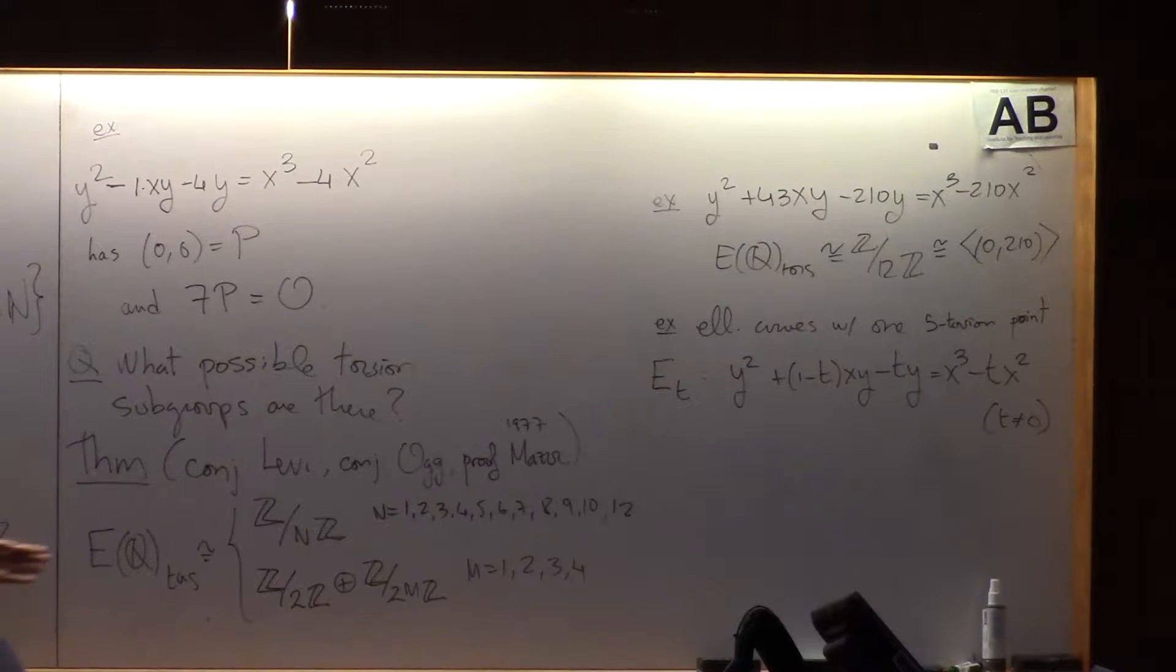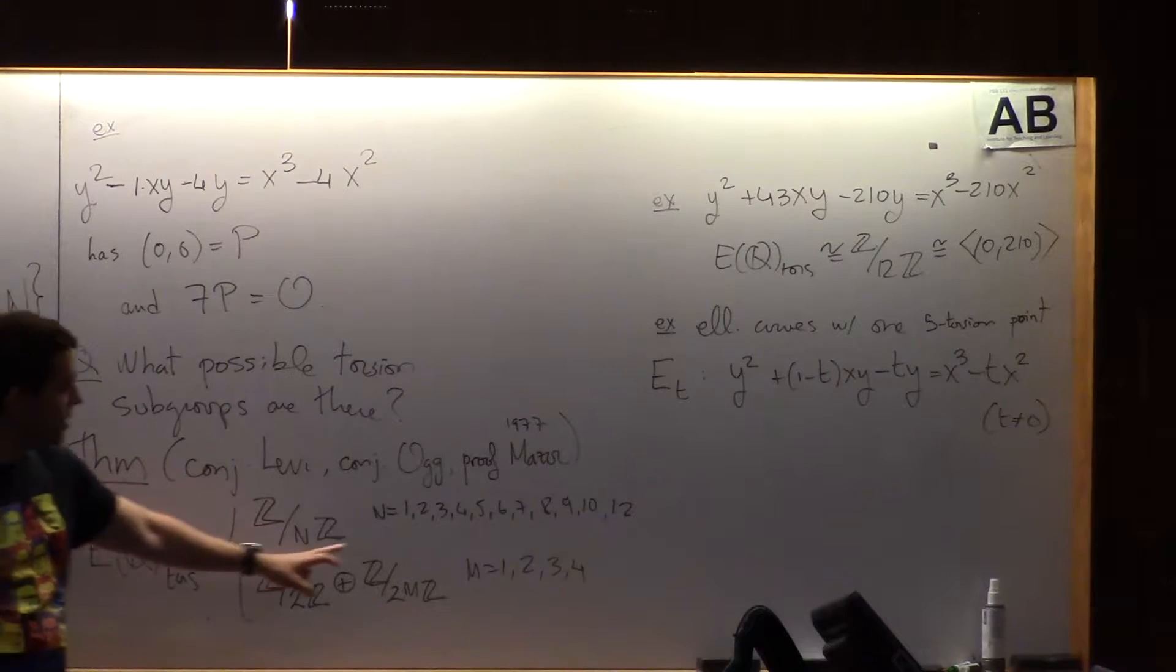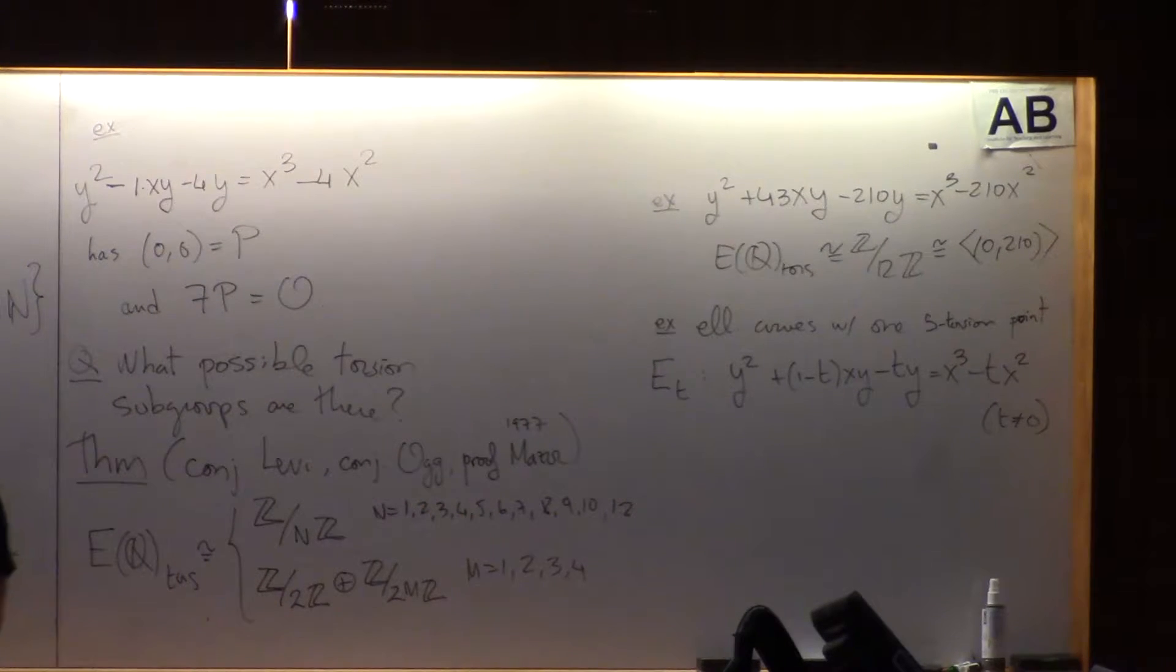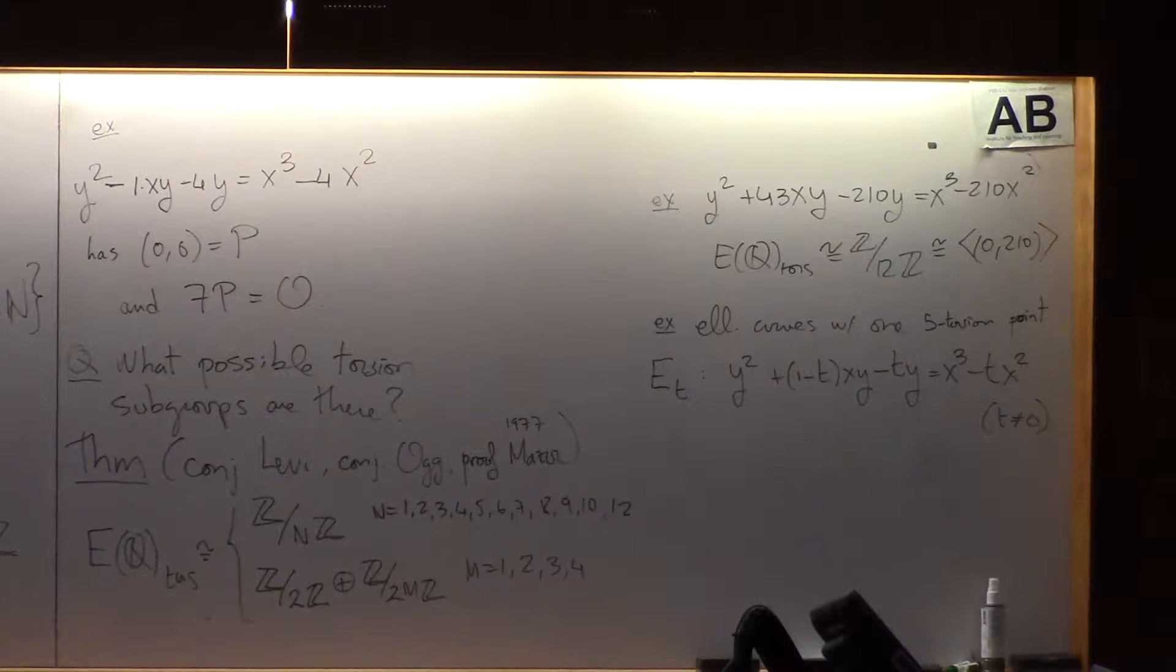By Mazur's theorem, if there is a five torsion point, then the torsion subgroup is either Z mod 5 or Z mod 10. Mostly Z mod 5 in the whole family. Z mod 10 is a little thin in there, but they are in there. So they come in this neat family.